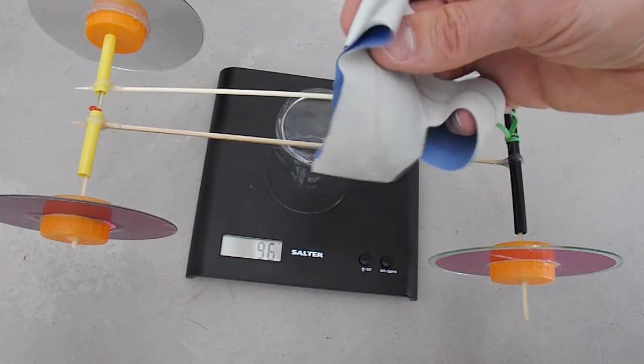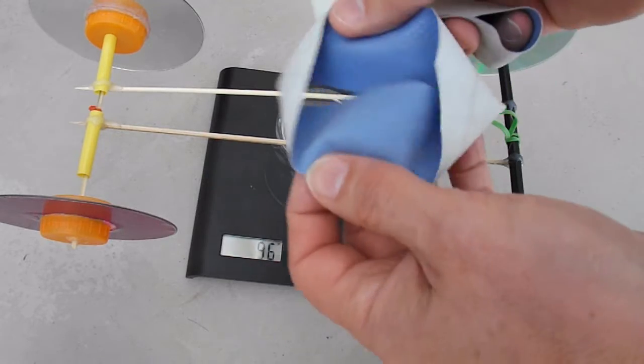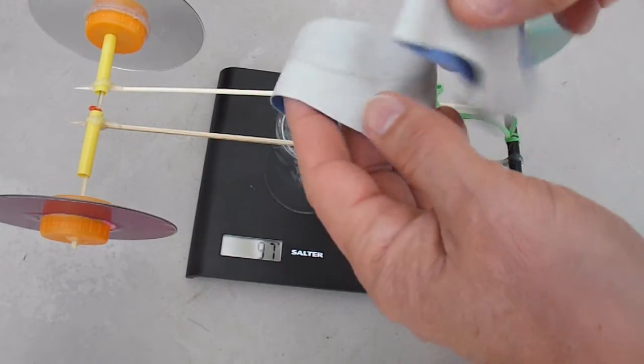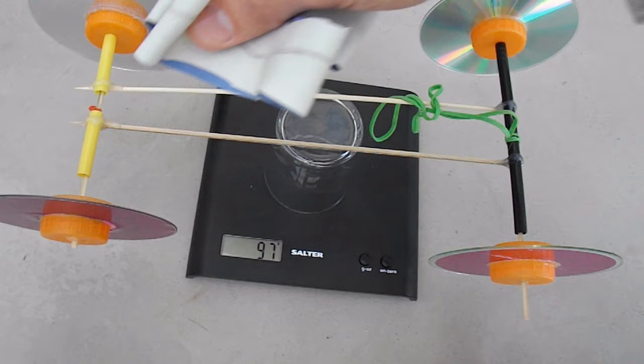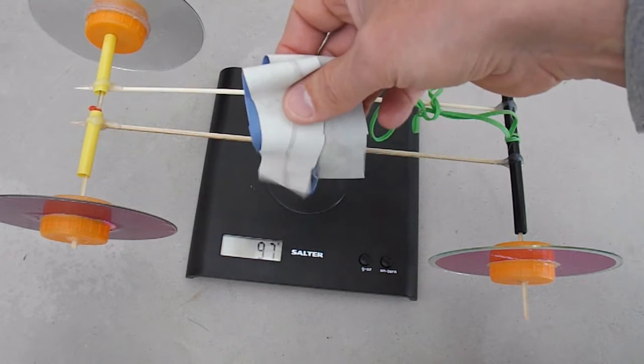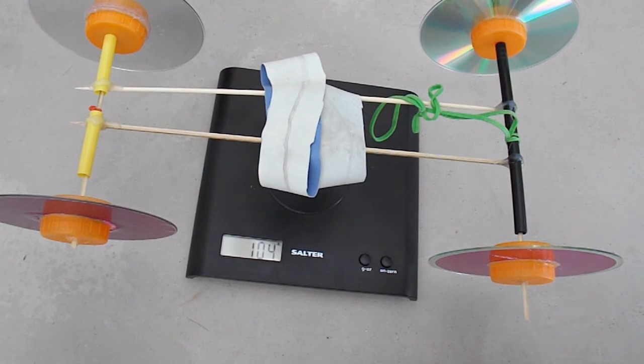So what I've got here is some strips cut from rubber gloves and I'll put those over the wheels in a minute, but we'll just add them on top. And that takes us up to 104g.